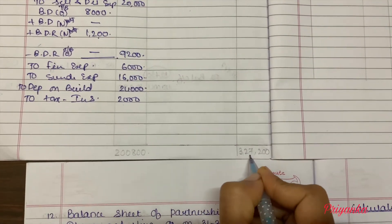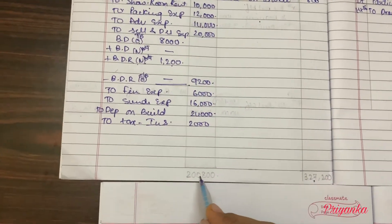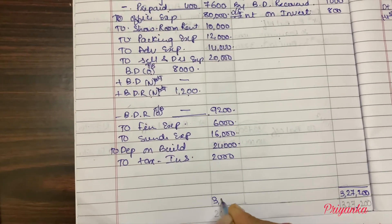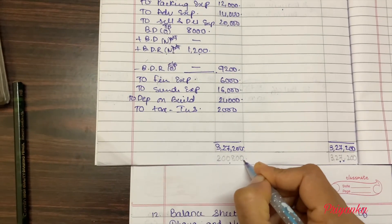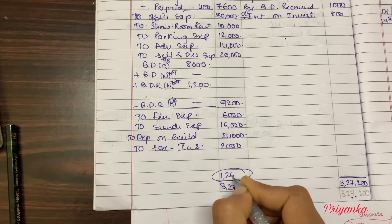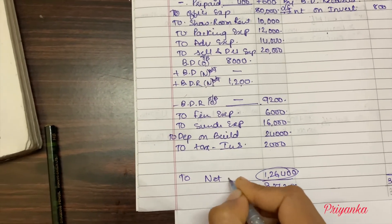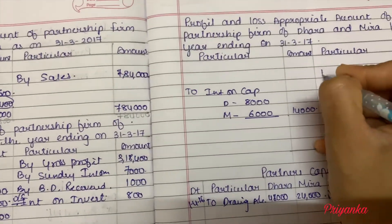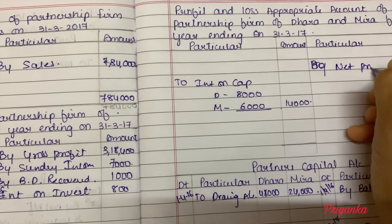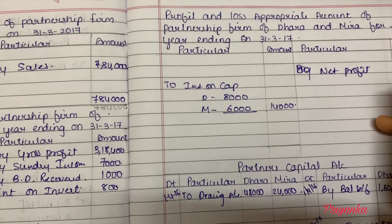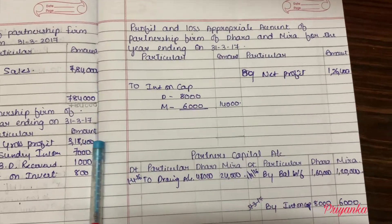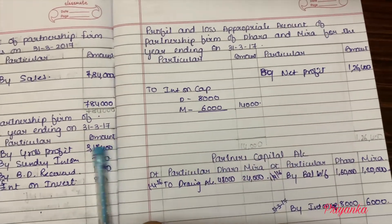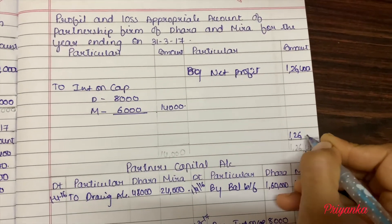Making the total of profit and loss, we get three lakh twenty-seven thousand two hundred on the credit side and two lakh eight hundred on the debit side. The credit side is more, so write three lakh twenty-seven thousand two hundred on both sides. Remove the difference — three lakh twenty-seven thousand two hundred minus two lakh eight hundred — you get one lakh twenty-six thousand four hundred. That is your net profit, which moves to the profit and loss appropriation account. Total: one lakh twenty-six thousand four hundred.